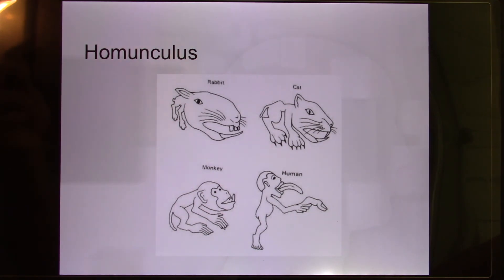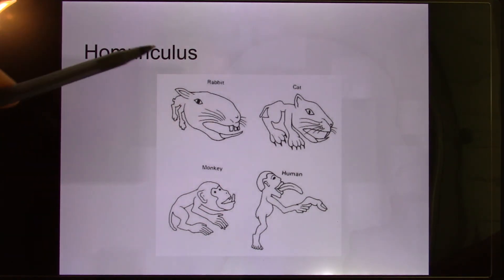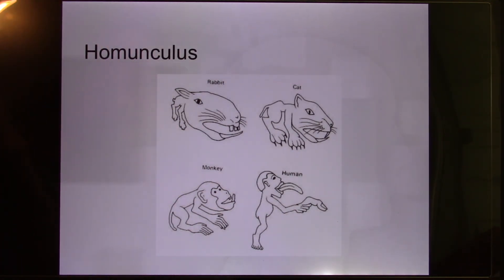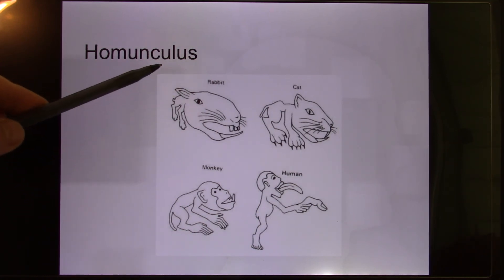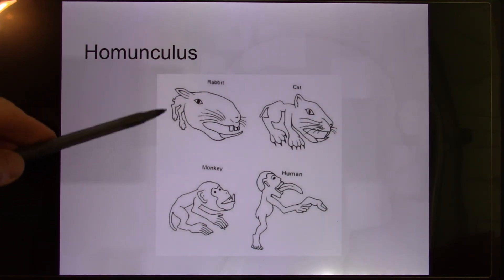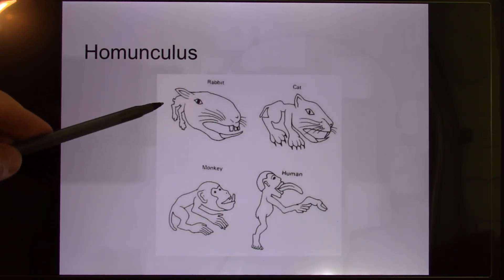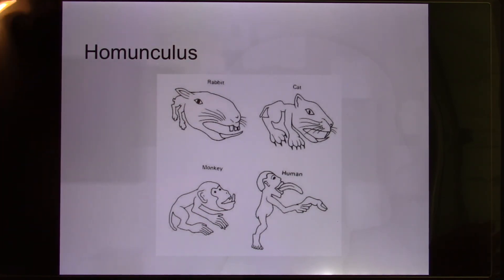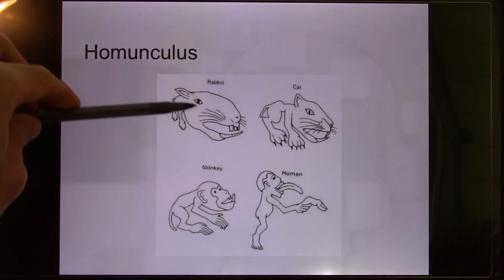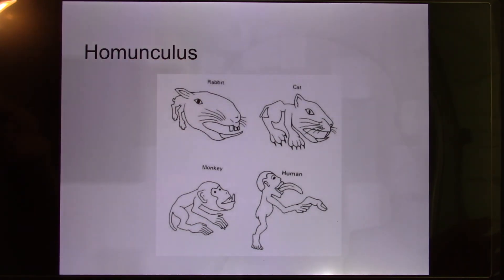This principle applies to other animals too. Rabbits and cats spend about 90% of their neurons analyzing information from the face. An animal can lose a limb — it won't be pleasant, but they can survive. If they lose their head, it's game over. So a lot of neurons are devoted to analyzing information from the face and head compared to the body — similar across other animals and humans.